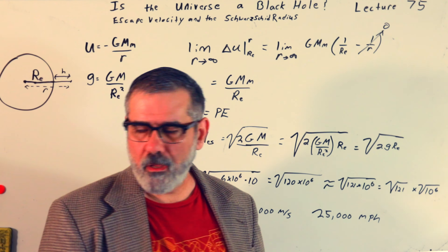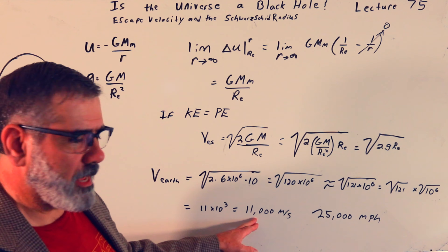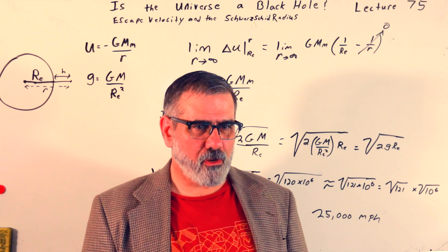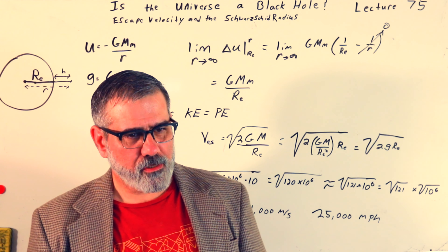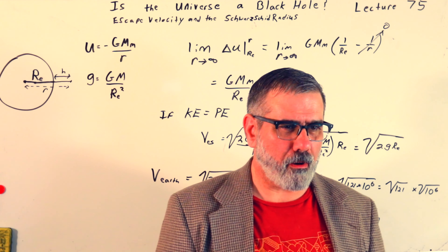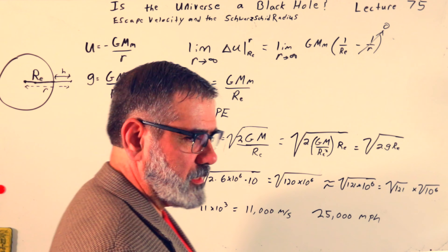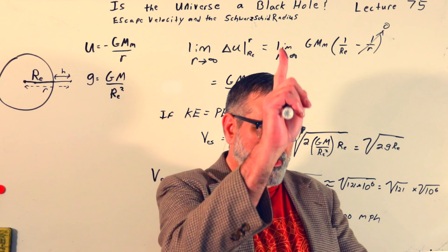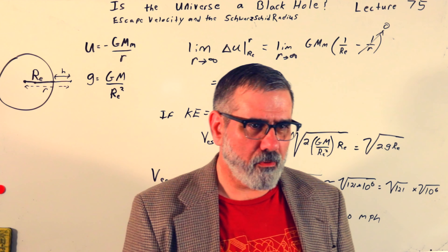If we do a similar calculation for the moon, that brings the number down to about 2,200 meters per second, or about 5,000 miles per hour. So if you've ever watched videos of astronauts walking on the moon and wondered if they jumped too much and would fly off into space forever — no, they wouldn't. The escape velocity is 5,000 miles per hour; they're not going to jump that fast.